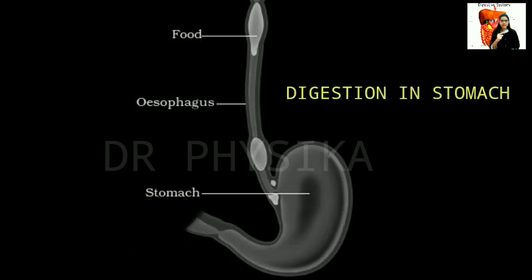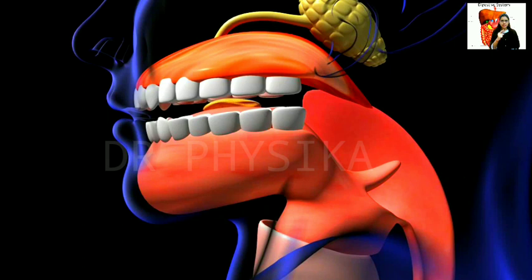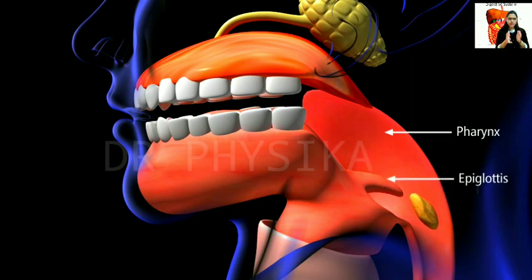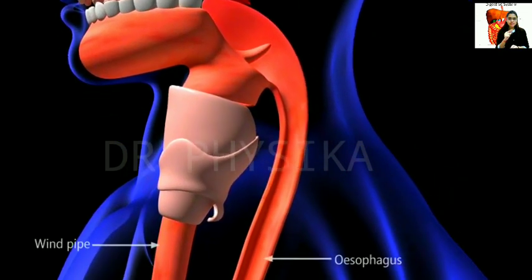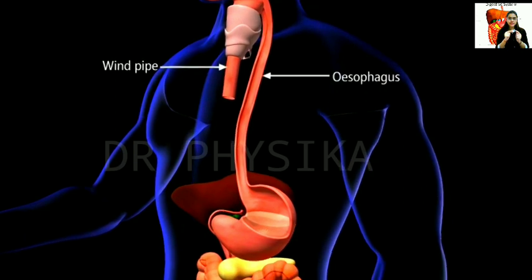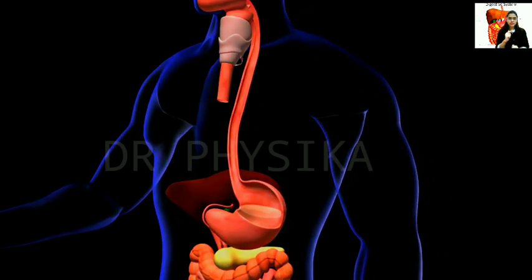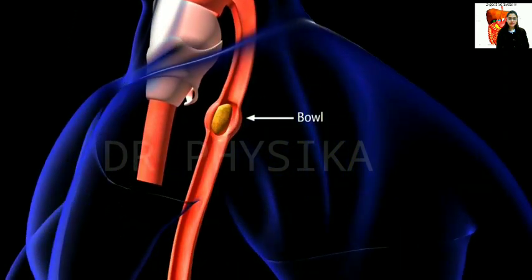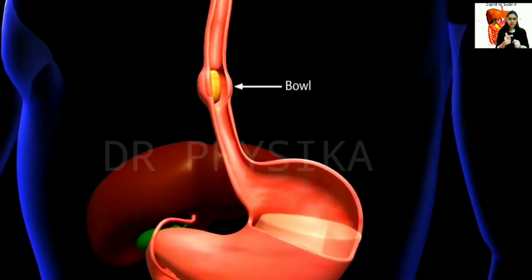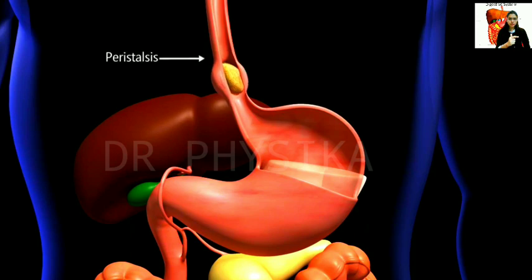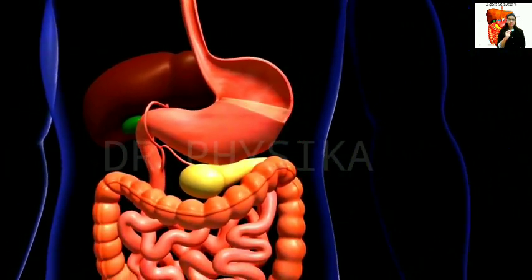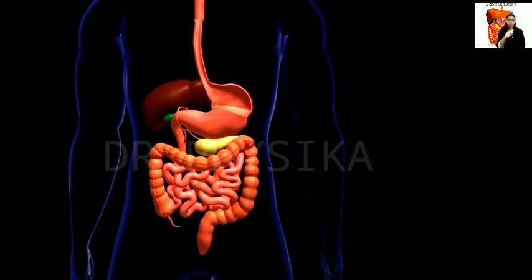Let us learn about the digestion in the stomach. The food passes further to the pharynx located in the throat, and then passes to the esophagus. The esophagus is a long muscular tube extending from the pharynx to the stomach. The food at this stage is called a bolus. The food travels through a series of contractions called peristalsis, which moves it into the stomach. The stomach has a layer of muscular walls that mixes the food with liquid inside the stomach, such as hydrochloric acid.